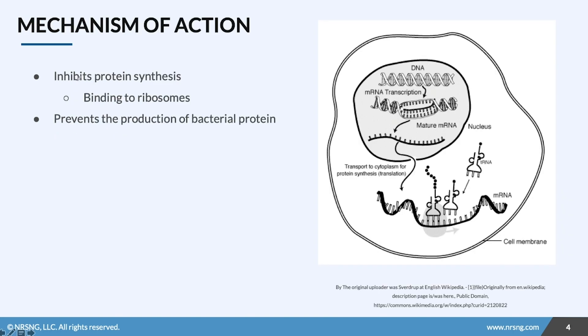Macrolides' mechanism of action focuses on inhibiting protein synthesis by binding on ribosomes, thus preventing the production of bacterial protein which is essential for bacterial growth. Just remember that it inhibits protein synthesis, which is crucial for bacterial growth and development.